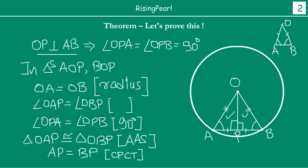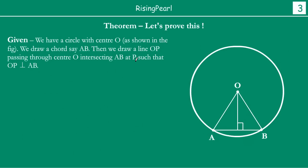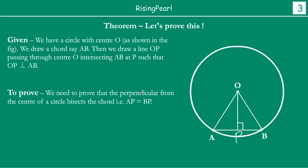Now let us clean this up and show you the proper way to present this in an exam or test. We start by stating what is given: we have a circle with center O as shown in the figure, we draw a chord AB, and we draw a line OP passing through center O, intersecting AB at point P, such that OP is perpendicular to AB. What we have to prove is that the perpendicular from the center bisects the chord, i.e., AP equals PB.